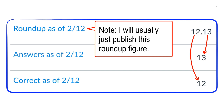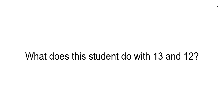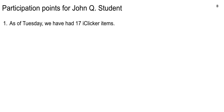Usually I just publish the roundup figure, and you can break down how many answers you have just by reading the decimal part of your roundup score. The threshold for getting the full 25 out of 25 for your semester grade is 85% participation, so you have to know how many questions have been asked at any point in the semester.